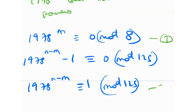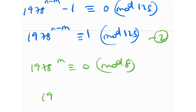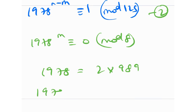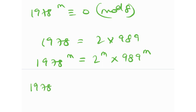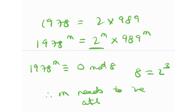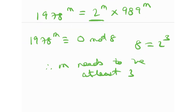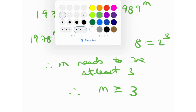Looking at equation 1: 1978^m ≡ 0 (mod 8). Now 1978 = 2 × 989, and 989 is prime. So 1978^m = 2^m × 989^m. We need this to be 0 mod 8 = 2³. Since 989 is odd, it contributes no powers of 2, so we need 2^m to supply all three. Therefore m must be at least 3. This gives us the important result: m ≥ 3.